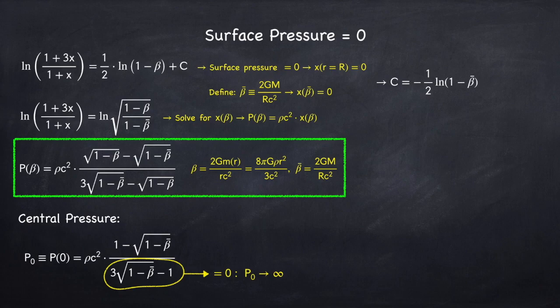So how do we interpret this? When this denominator goes to zero, in order to remain in hydrostatic equilibrium, the neutron star will require an infinite amount of pressure, which means it won't be able to stay in hydrostatic equilibrium, and it will collapse to a black hole.